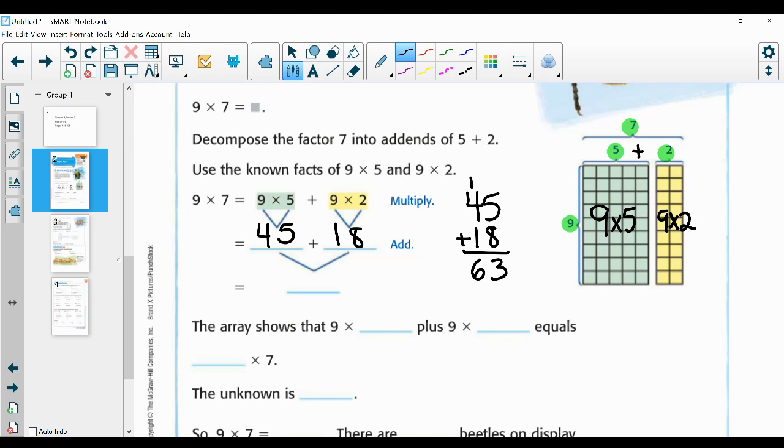Or you can do mental math. So forty-five plus eighteen. Okay. Forty plus ten is fifty. Five plus eight is thirteen. Five and ten is sixty. Plus three is sixty-three. So either way, you'll get sixty-three.